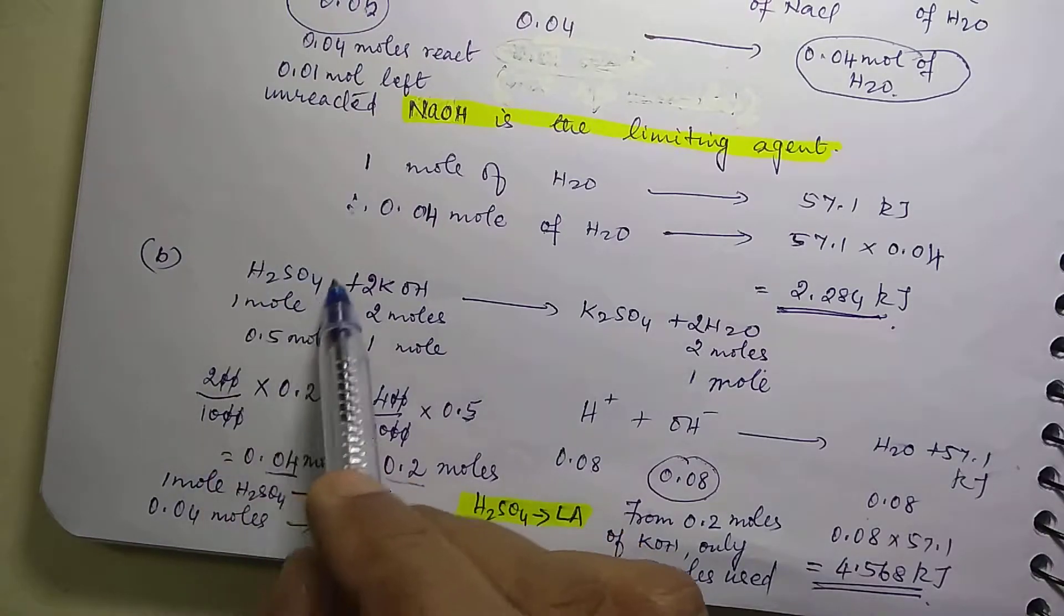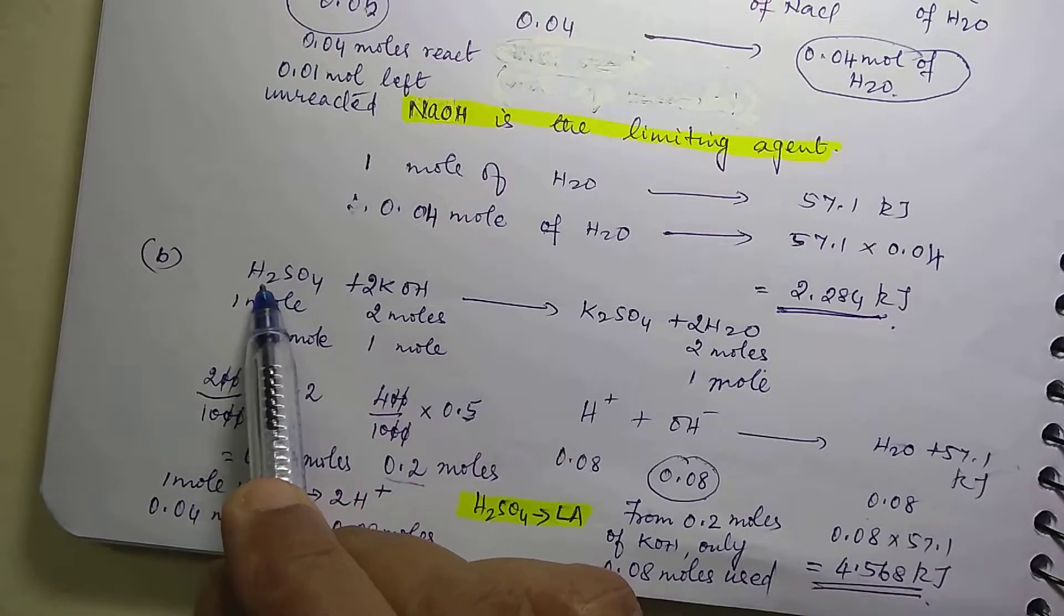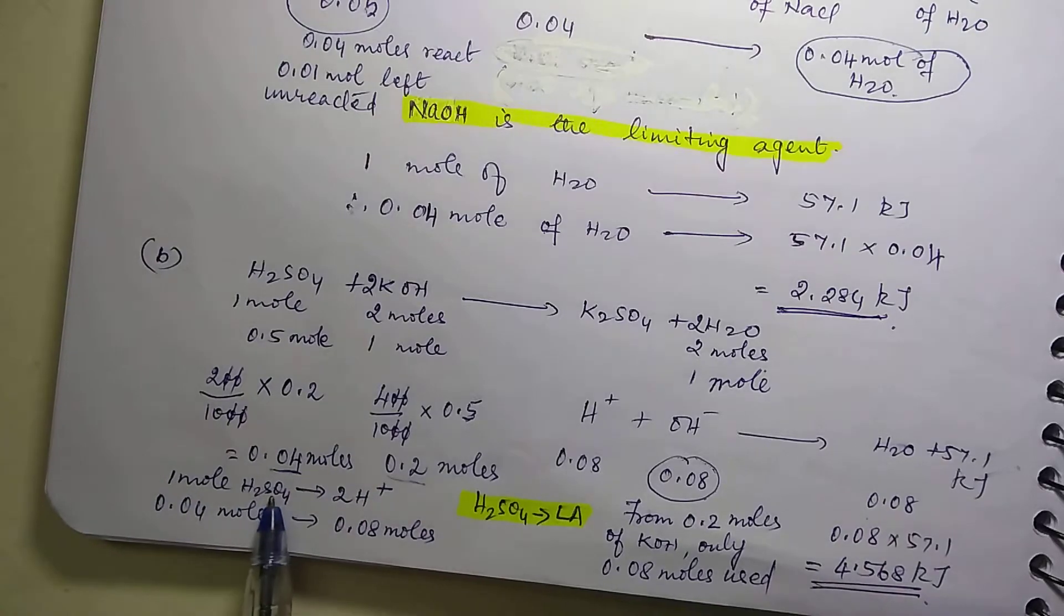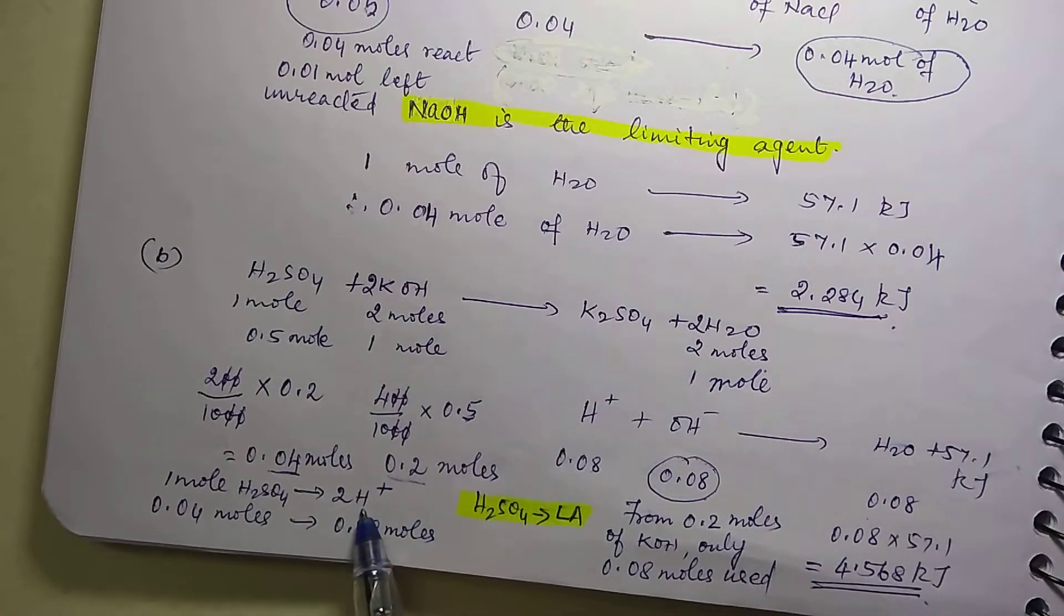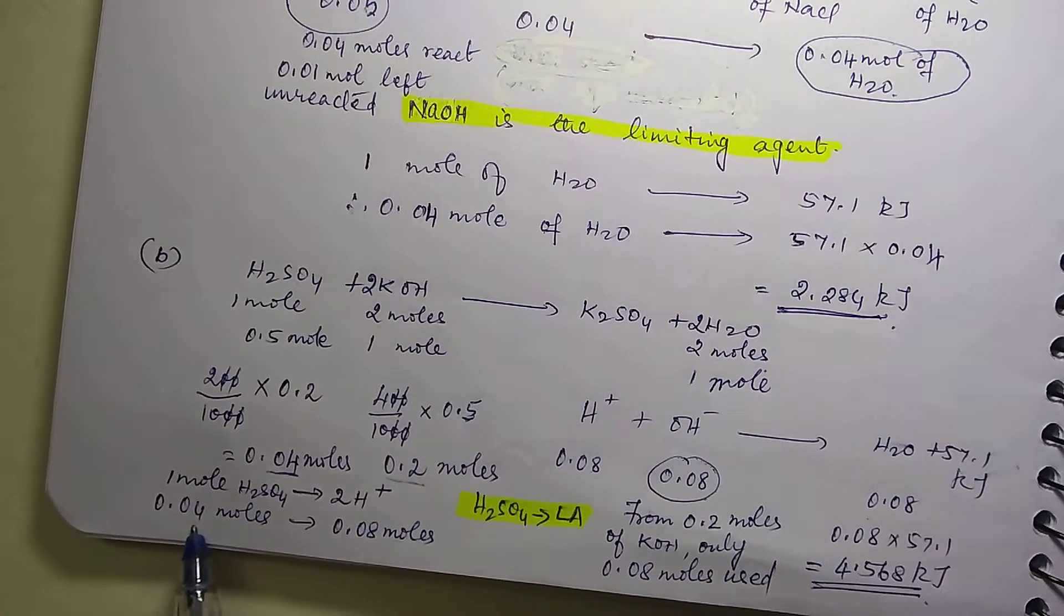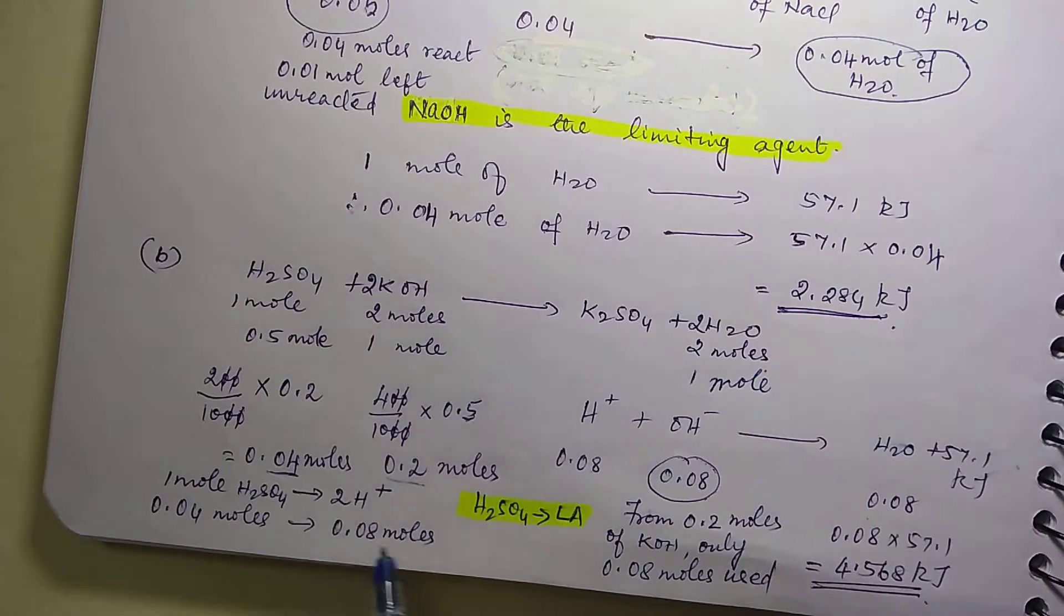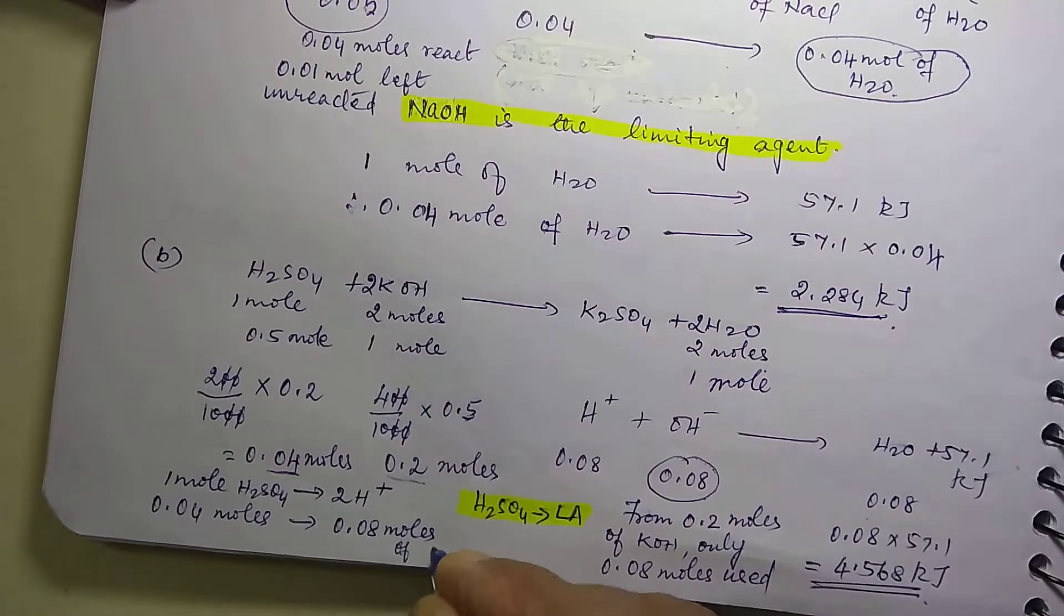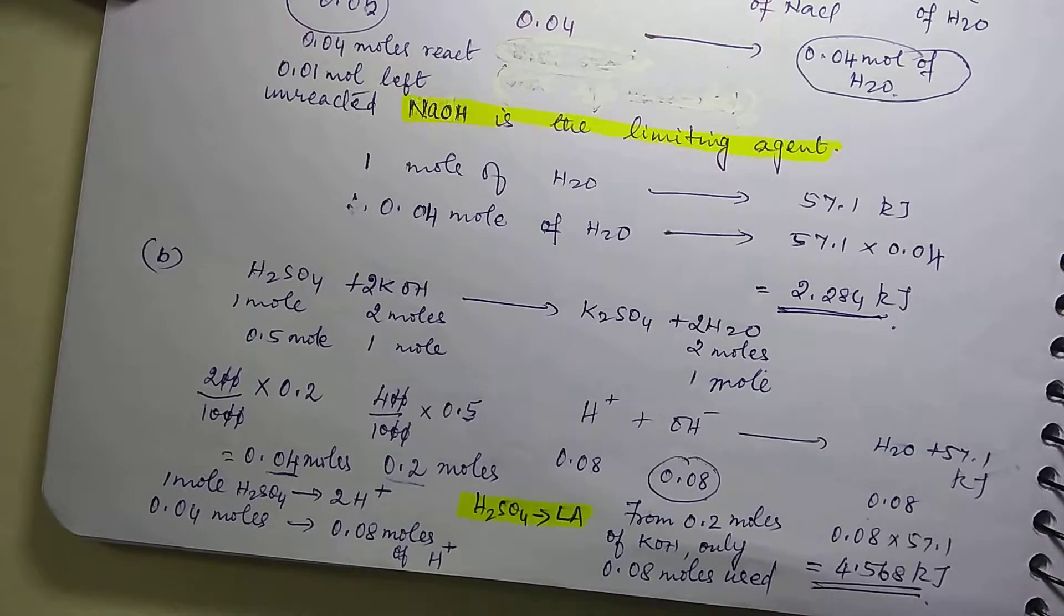Now, each mole is giving you 2 moles of H+ ions. 1 mole of sulfuric acid is giving you 2 moles of H+ ions. So 0.04 moles will give you 0.08 moles of H+ ions. Be very clear with this.